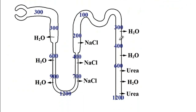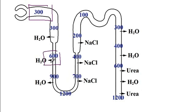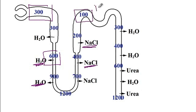Looking at the osmolarity graph along different segments: in the proximal convoluted tubule osmolarity stays isotonic at 300 until urine reaches the descending limb of the loop of Henle, where only water is reabsorbed so osmolarity increases and becomes hypertonic. Then in the ascending limb, salt is reabsorbed, so osmolarity decreases and by the time urine reaches the distal convoluted tubule it has the lowest osmolarity.